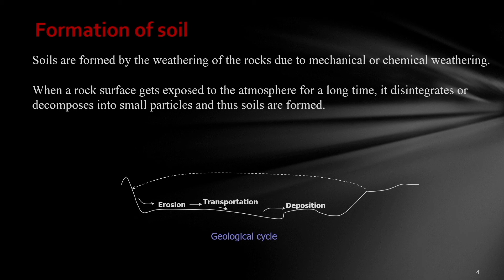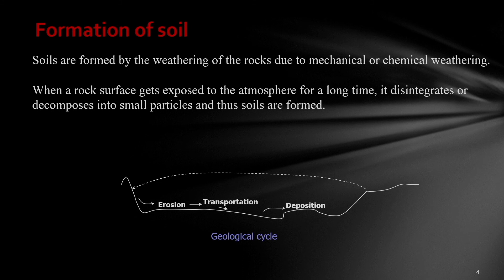Talking about the formation of soils, soil can be formed in various stages. The first stage of soil formation is known as weathering. In the process of weathering, the rock — which is known as the parent material — gets broken into small pieces. Generally, the weathering process can be mechanical weathering or chemical weathering. Once a rock surface gets exposed to the atmosphere for a long time, it disintegrates or decomposes into small particles and soils are formed. The soils are then transported to other places by various natural agencies.